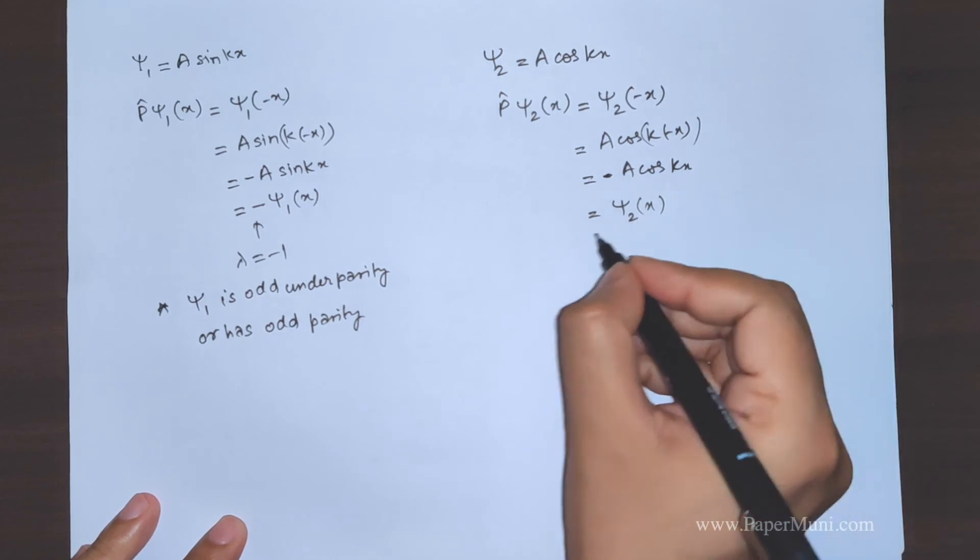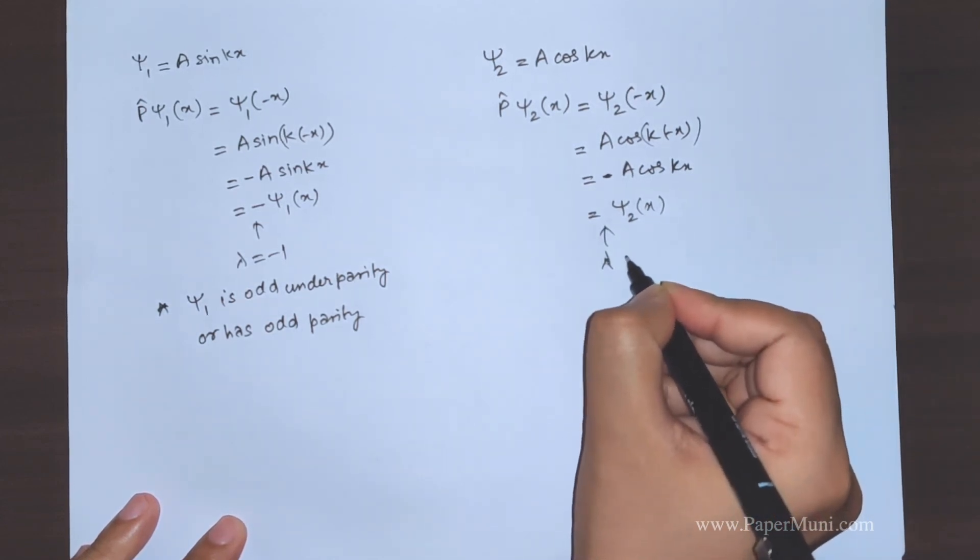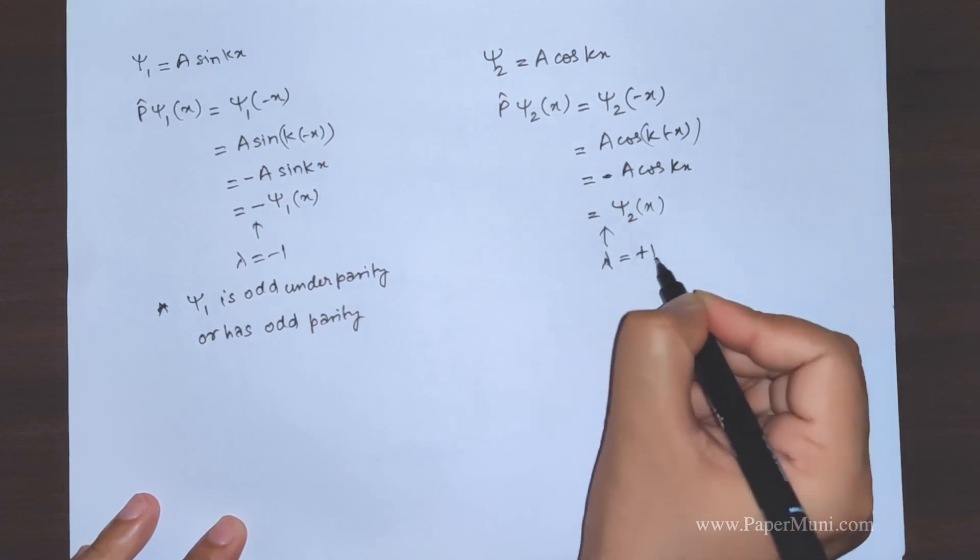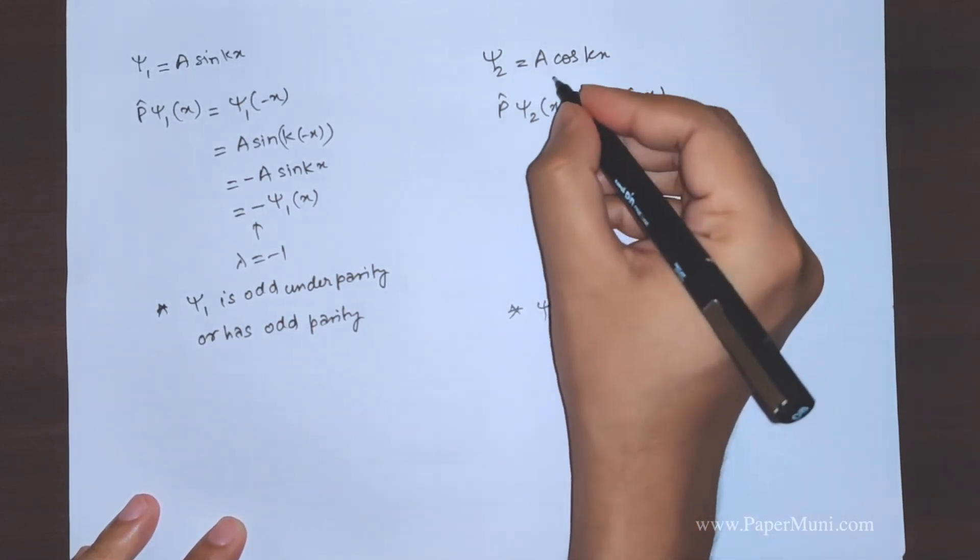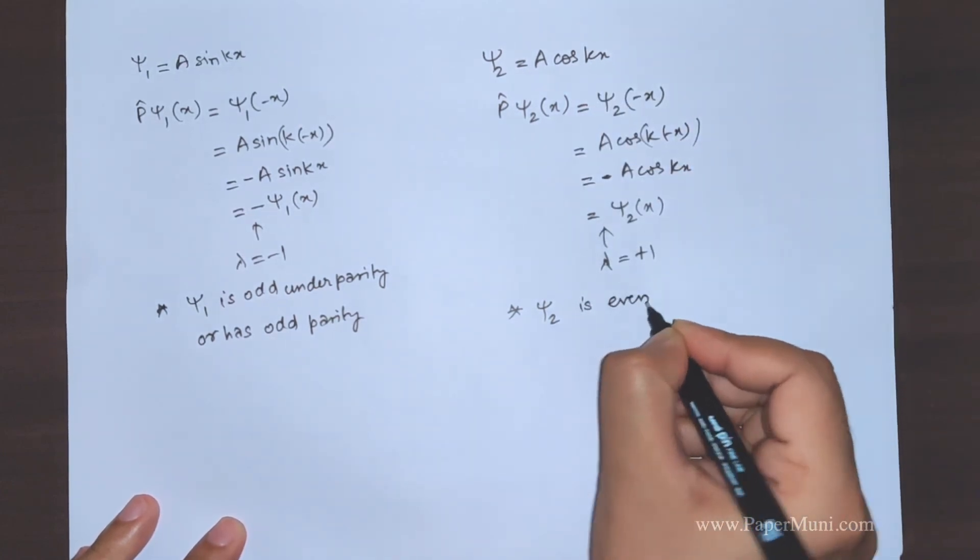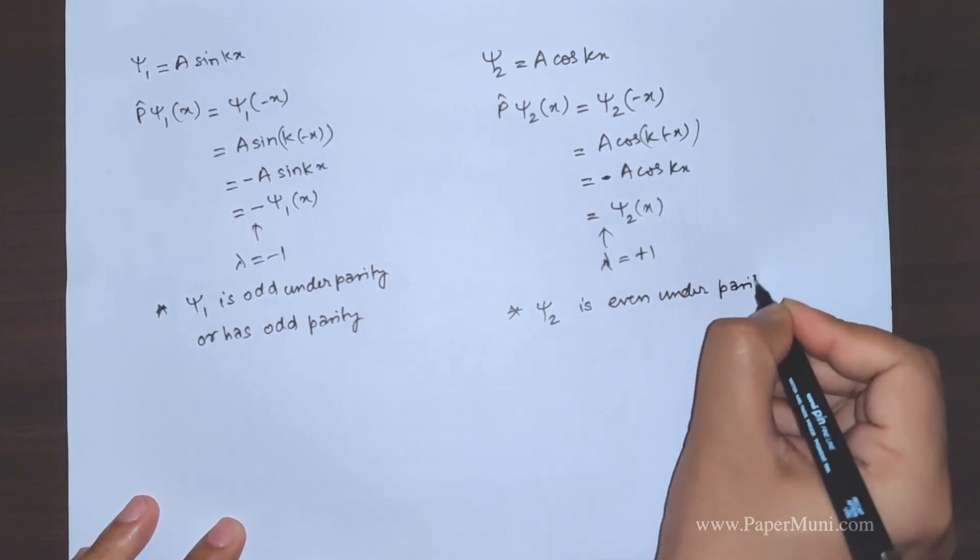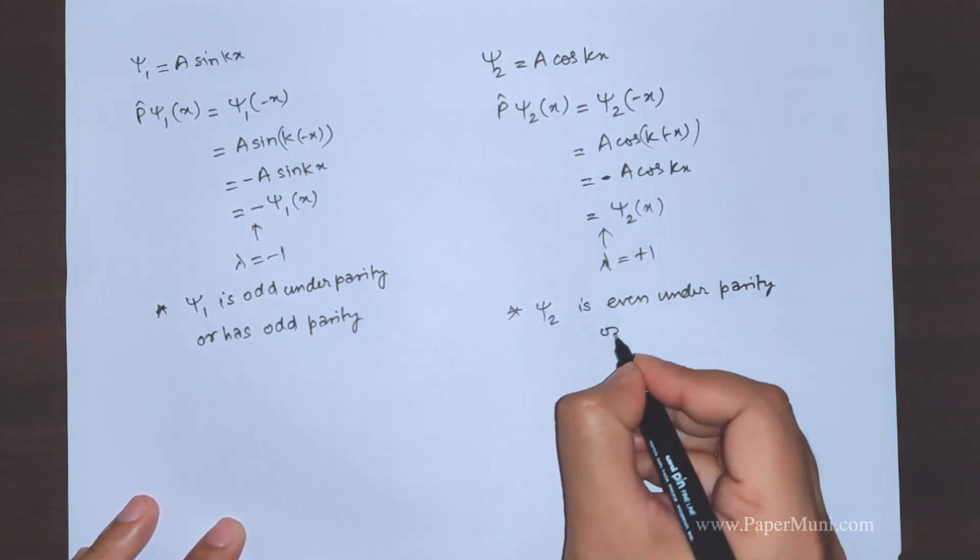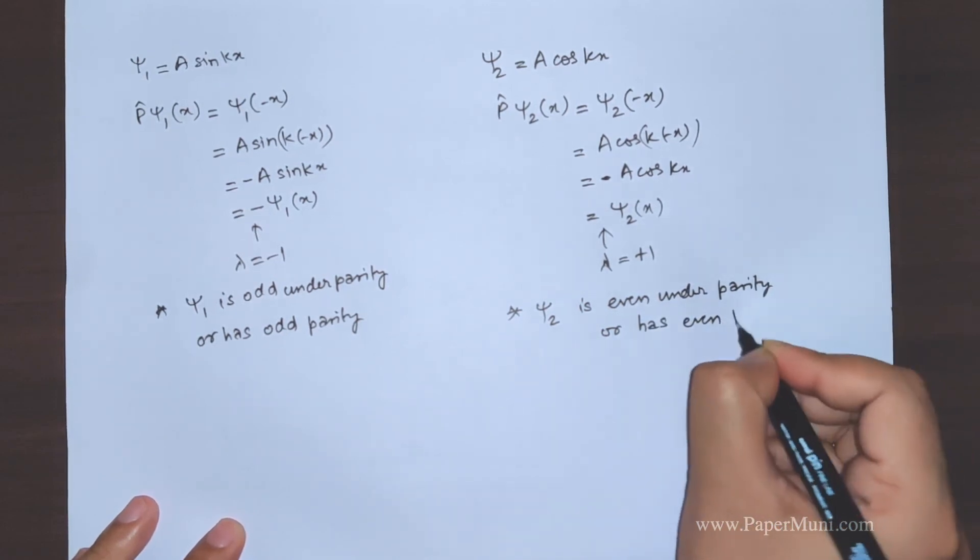That means the eigenvalue here is plus one. So we say that ψ₂, which is A cos(kx), is even under parity, or has even parity.